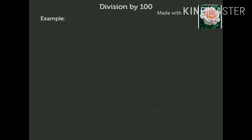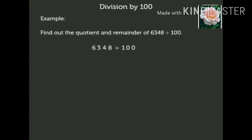Now let us solve one more example without actual division. Find out the quotient and the remainder of 6348 divided by 100. We know that the digits in the ones and tens place of the dividend form the remainder. Thus, here 48 is the remainder. Now the remaining digits form the quotient. Thus, here 63 is the quotient.